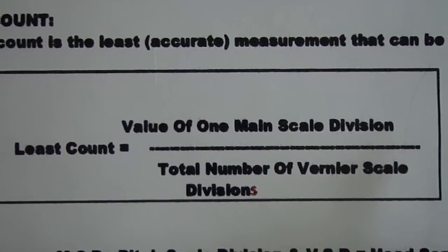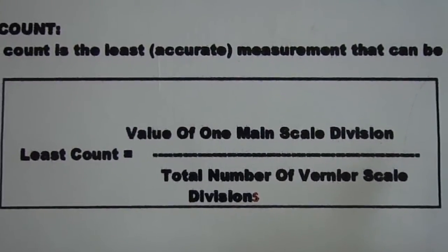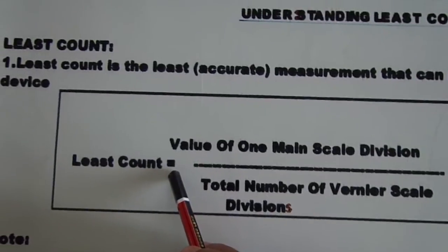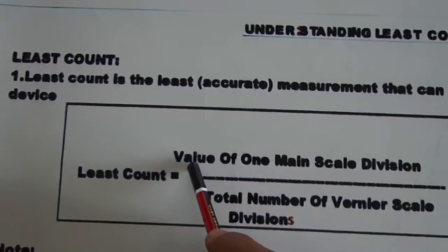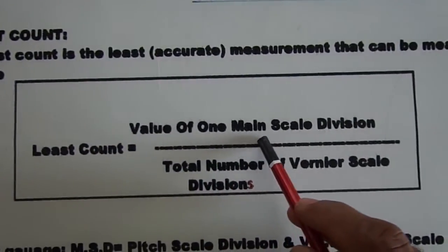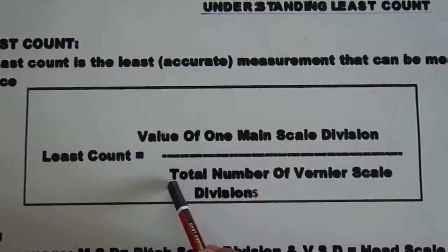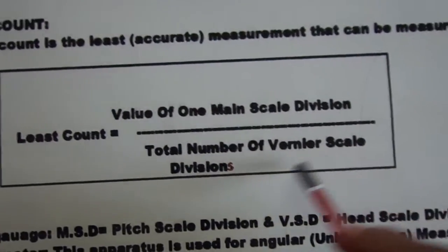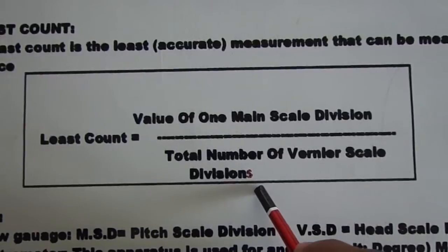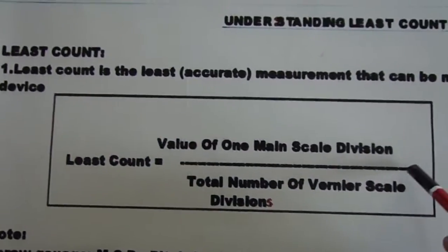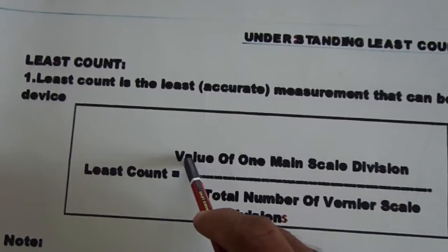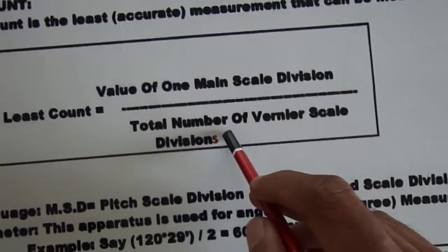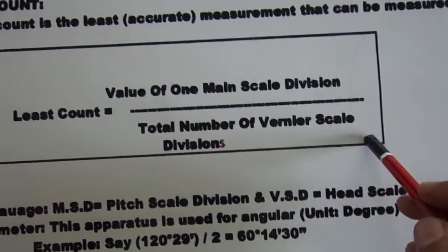A general formula for least count is: least count equals the value of one main scale division divided by the total number of Vernier scale divisions. The numerator comes with a value that includes the unit, while the denominator is simply a number — the total number of divisions.